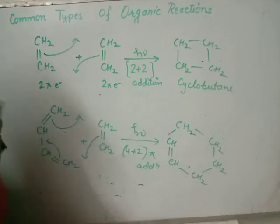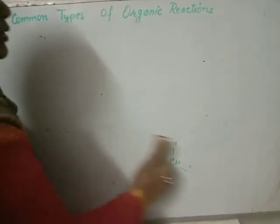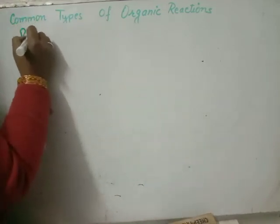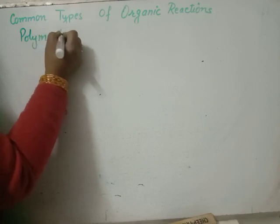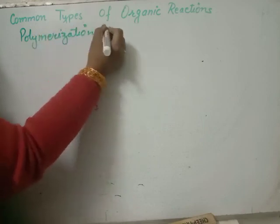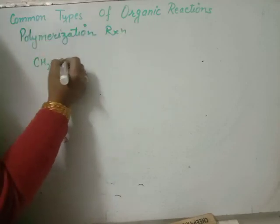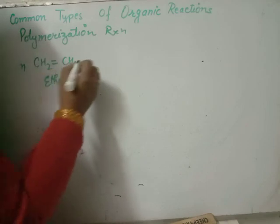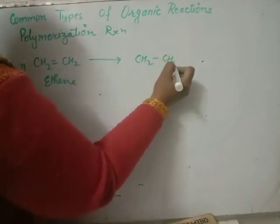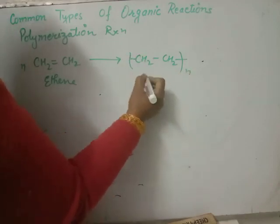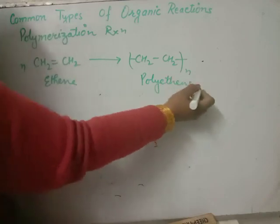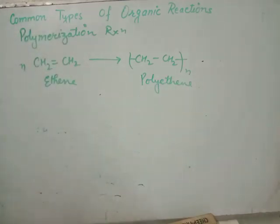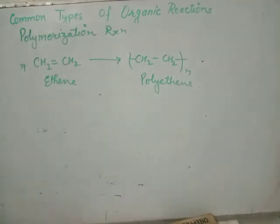The last one is the polymerization reaction, in which a large number of smaller molecules combine together to give a large-size molecule known as a polymer. For example, a large number of ethene molecules combine together to give polyethylene (polythene) — a single large molecule. This is the polymerization reaction. On the basis of polymerization, there is a separate branch of chemistry known as polymer chemistry. Thank you.